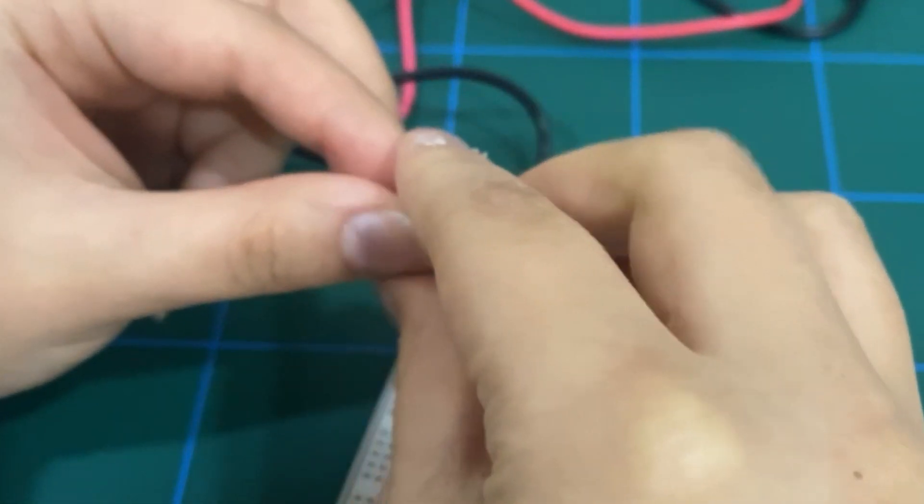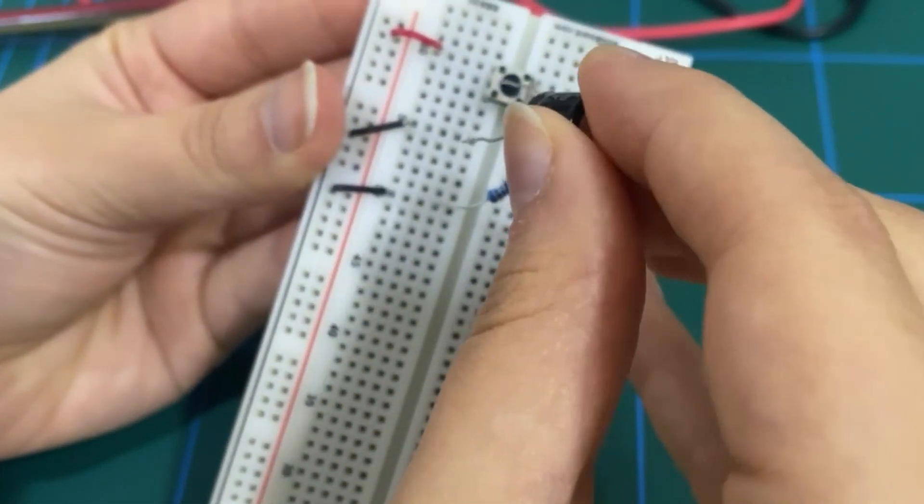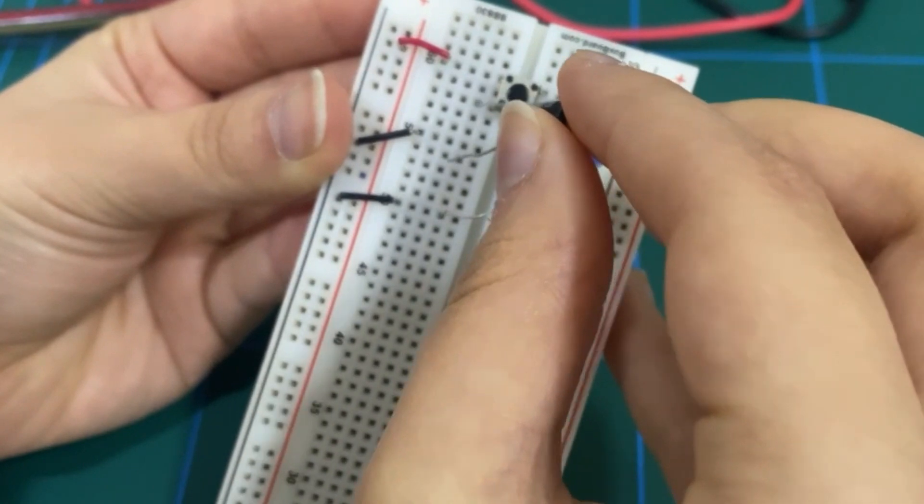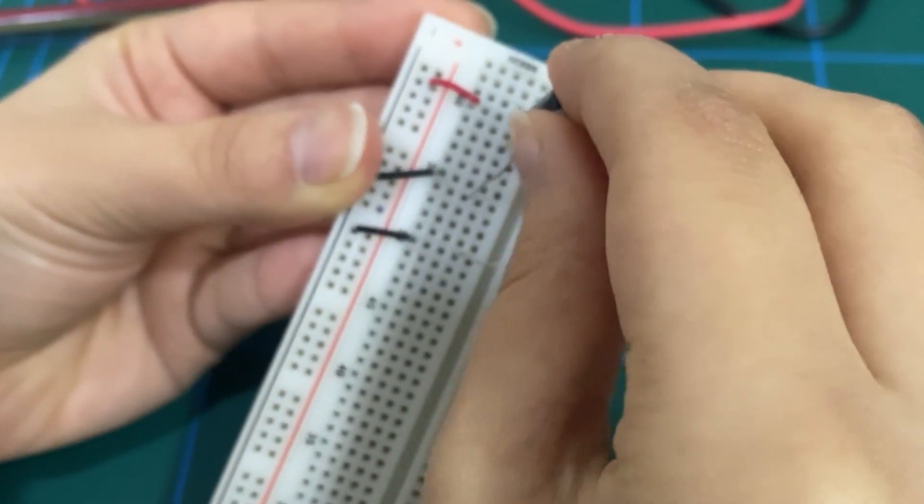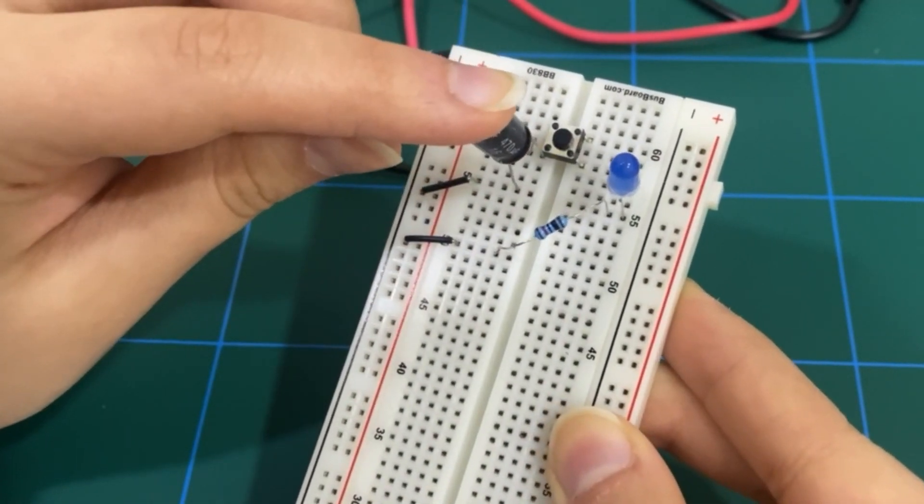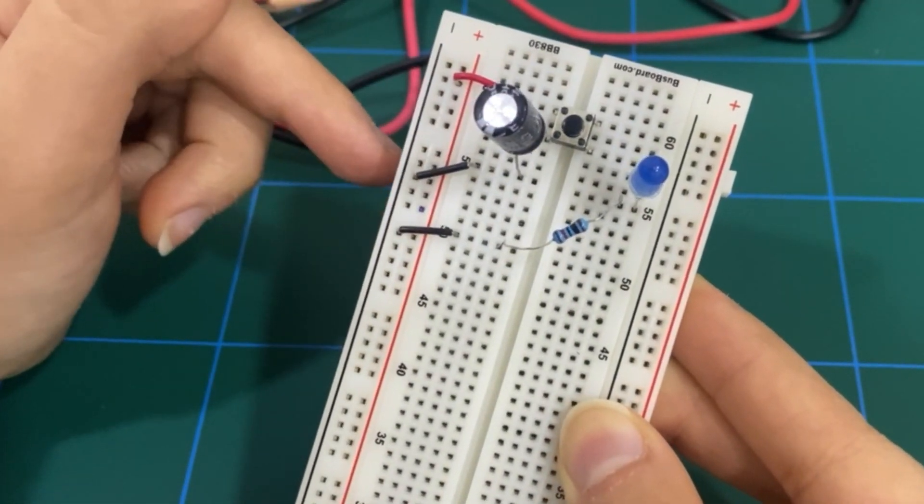So we'll hook up the capacitor in such a manner where the positive end of it will be connected to the power supply when we close or press down onto the push button and the negative to the ground.